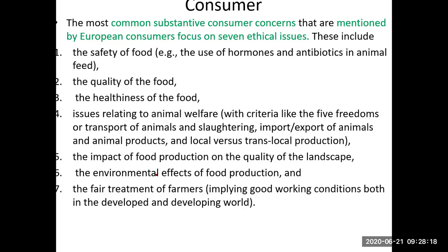Finally, in case of consumers, food industries must follow rules and regulations. Seven ethical issues are identified by European consumer organizations: the safety of food, the quality of food, the healthiness of food, issues related to animal welfare — how animals are reared, slaughtered, and the practices of importing and exporting animal products — the impact of food production on the quality of the landscape, the environmental effects of food production, and the fair treatment of farmers. These are the same issues we already discussed. If we maintain these issues regularly in our food industries, then the safety, quality, and healthiness of food will be maintained. Thank you.